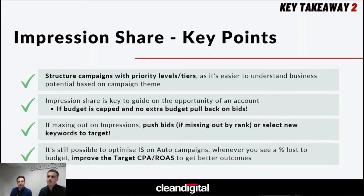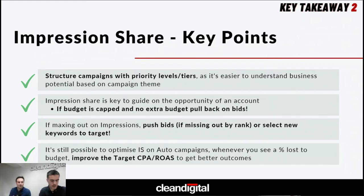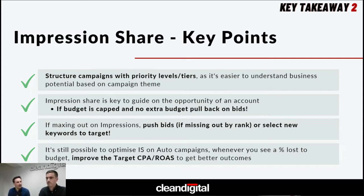To summarize: it's very important to structure your campaigns based on priority tiers, understanding the impression environments available on keyword terms and the likely conversion rate of those terms. Impression share is key — use it as a guide for opportunity. If budget is capped with no room for scaling, look to pull back bids and get more clicks for your budget. If you're already maximizing impressions, push bids for more volume. The fundamental ethos of these changes applies equally to smart campaigns, target ROAS, and target CPA bidding strategies.